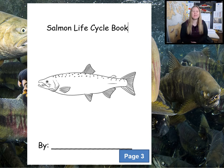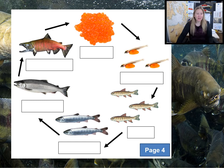Let's turn to page three of our salmon science journals and create a salmon life cycle book. You can come back later to color in your salmon, but for now let's write our names and write our salmon life cycle story. Our first step is to fill out the salmon life cycle. We'll learn a lot more about each stage in a minute, but let's just get the bigger picture for now.